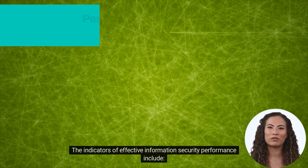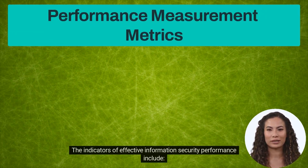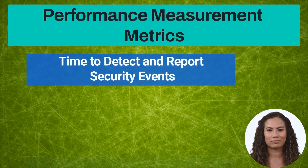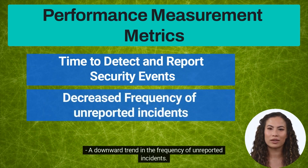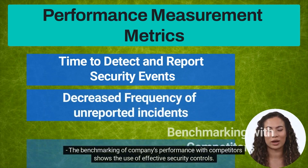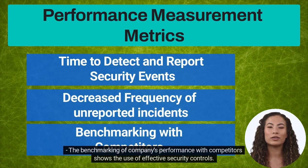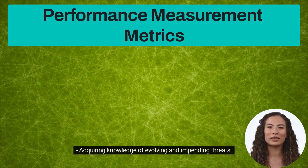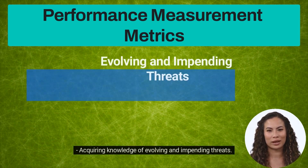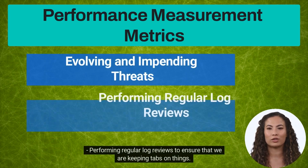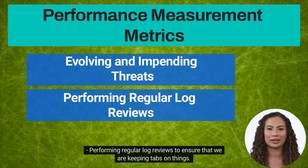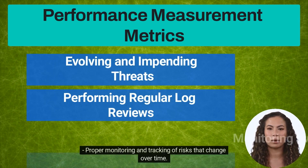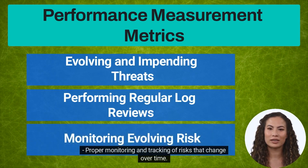The indicators of effective information security performance include: the time required to detect and report security events; a downward trend in the frequency of unreported incidents; benchmarking of the company's performance with competitors showing the use of effective security controls; acquiring knowledge of evolving and impending threats; performing regular log reviews to ensure timely detection of security events; and proper monitoring and tracking of risks that change over time.